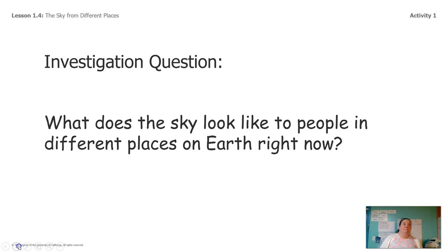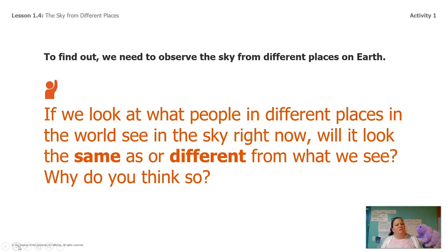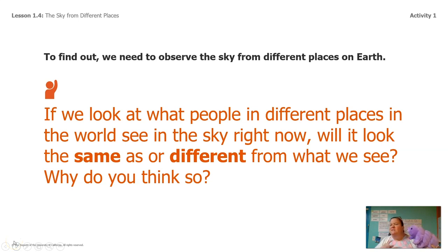Even though we're all inside at home on computers or watching TV, we're going to figure out a way to kind of travel around to different places on Earth and see what the sky is like there. And while we do it, we're going to look at this big question: if we look at what people in different places in the world see in the sky right now, will the sky look the same to them or will it look different? And then why do you think that? I'm going to listen to Lavender. Let's look and see.